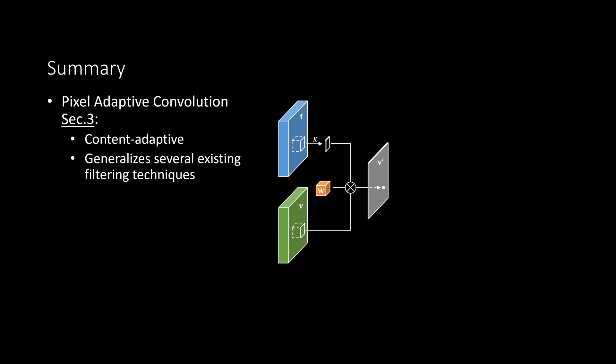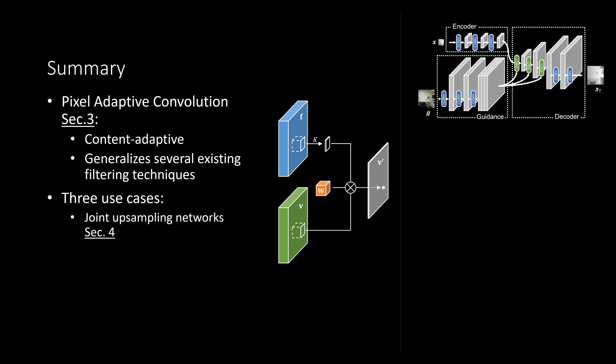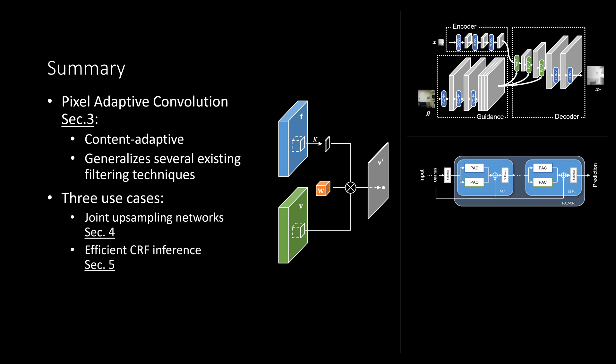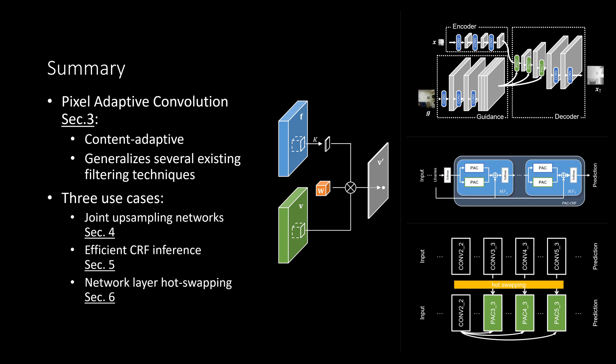In summary, PAC is a content-adaptive filter that generalizes several existing techniques. We demonstrate its use cases including joint upsampling, efficient CRF inference, and network layer host swapping. Please refer to the respective sections for more details. Thank you.